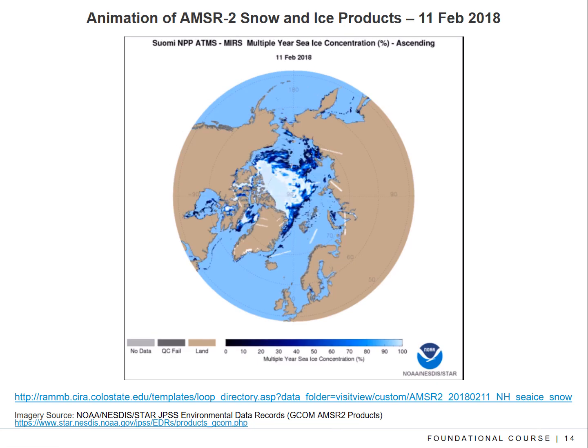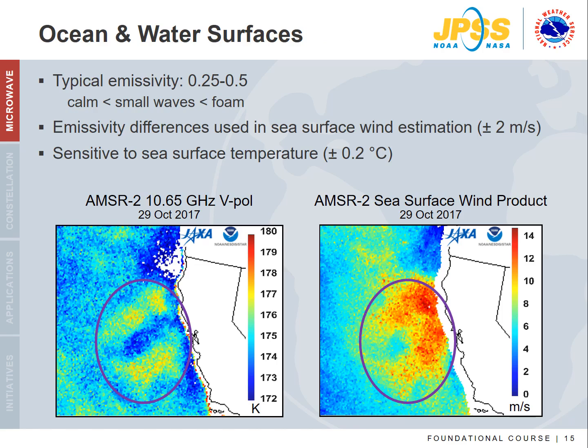Ocean and water surfaces typically have low microwave emissivities in the 0.25 to 0.5 range. As wind roughens the ocean surface, the emissivity and therefore the brightness temperature increases, even though the ocean's physical temperature does not change. If foam forms, this further increases emissivity. An AMSR2 10 GHz example shows how wind roughening increases microwave brightness temperatures — the circled area has warmer brightness temperatures due mostly to winds along the California coast, while slightly cooler brightness temperatures in the surrounding ocean are associated with calmer winds and a smoother surface.